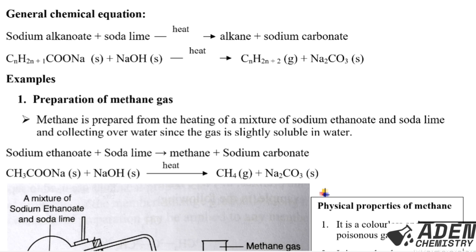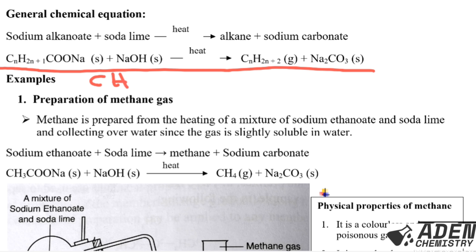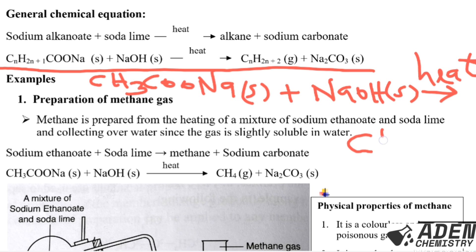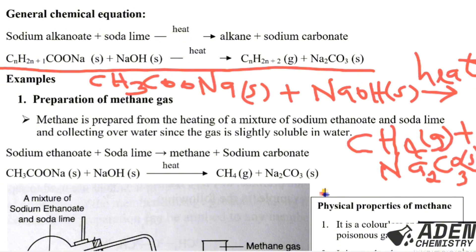To write the chemical equation for methane, remember methane has only one carbon, so substitute n=1. Sodium ethanoate is CH₃COONa (solid). Adding NaOH (solid) from soda lime, we get methane CH₄ (gas) — since n=1: C1H(2×1+2) = CH₄ — plus sodium carbonate Na₂CO₃ (solid). That is how we write the reaction for the formation of methane gas in the lab.